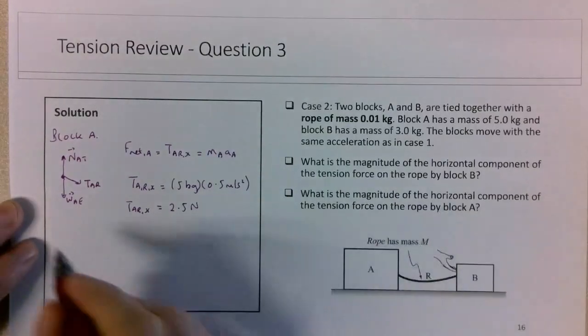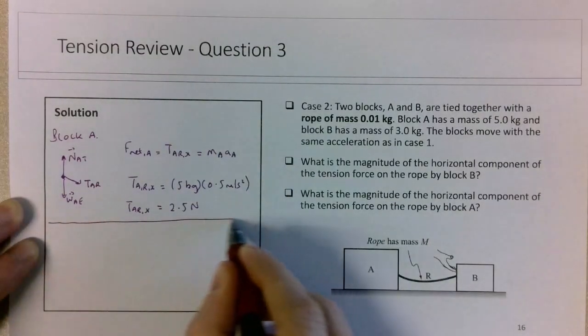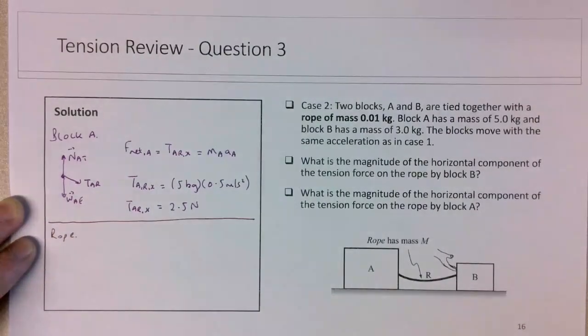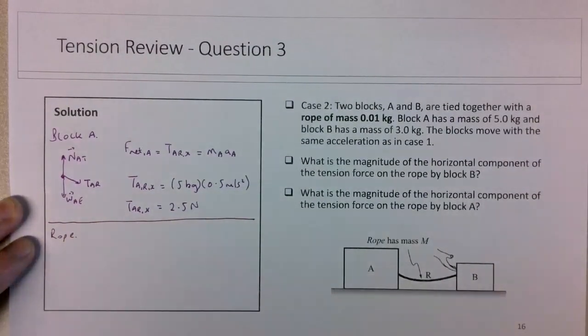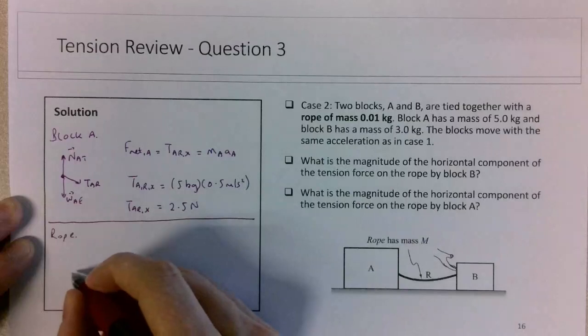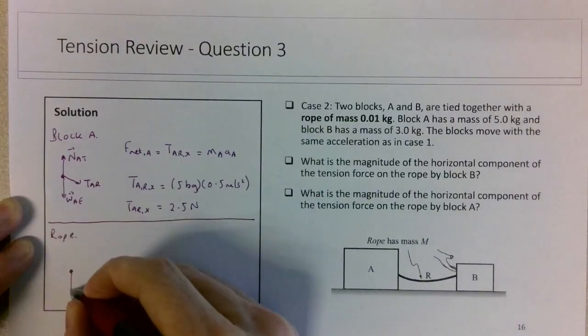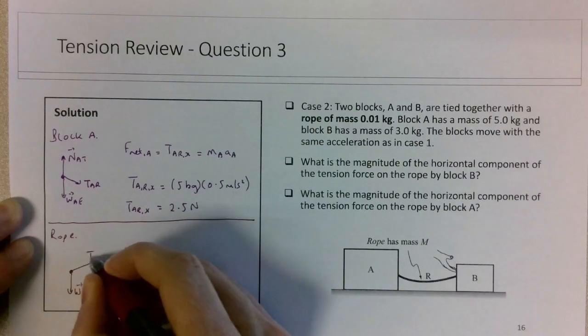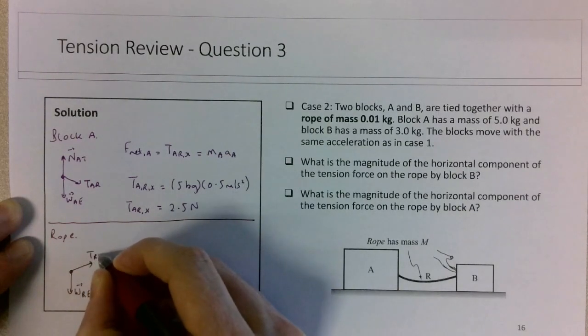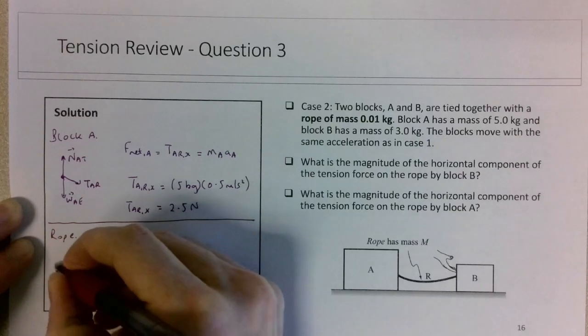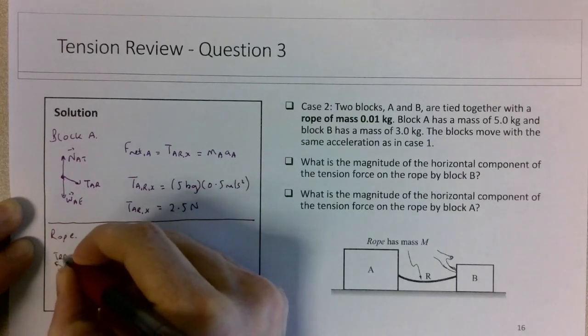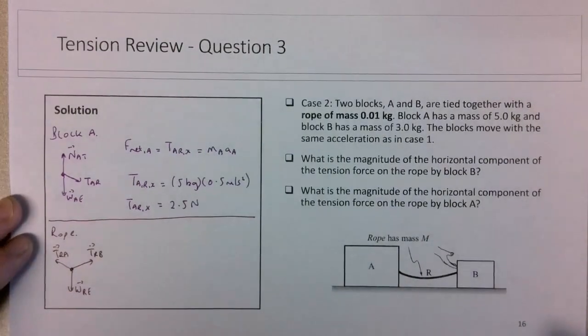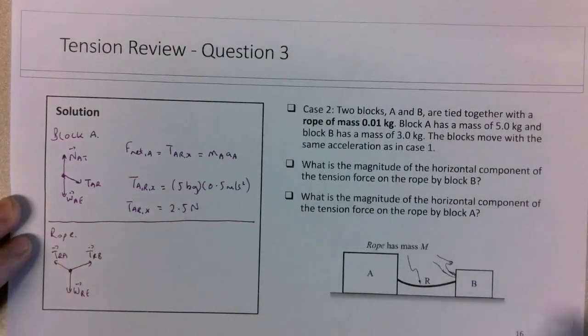Now, if we switch things up a little and think about the rope in this case, and then we can eventually move to think about block B. The rope has, again, three forces. There will be a small weight force on the rope by the earth, there will be a tension force on the rope by block B, and there will be a tension force on the rope by block A. Again, I'm only considering the x components of the forces.